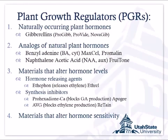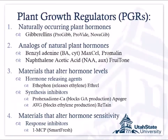The last class has just one example: a response inhibitor. 1-MCP is sold as SmartFresh, and what it does is block the plant's ability to sense the presence of ethylene. There are receptors in the cells of the plant that respond to ethylene, and 1-MCP comes in and disables those receptors so the plant cannot sense ethylene. This is used for storage — you block the fruit from responding to ethylene and it slows down the ripening process.